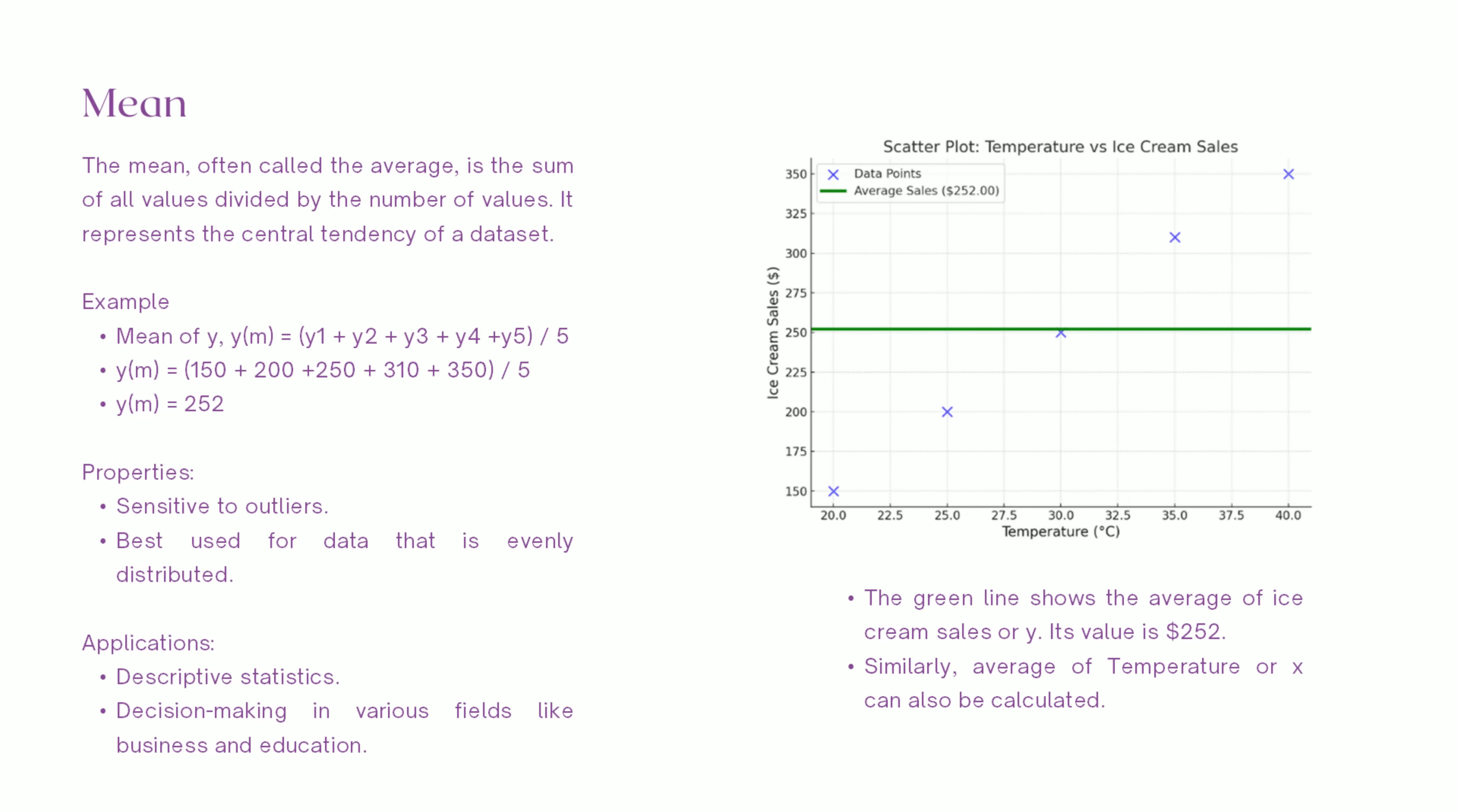But here's something important: the mean is sensitive to outliers. Let's say there was a day with an error in recording, and sales were logged as $1,000 instead of $150. The mean would jump significantly, misleading us about the typical sales. This is why, when using the mean, always check for